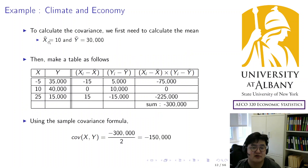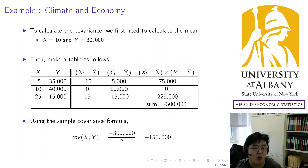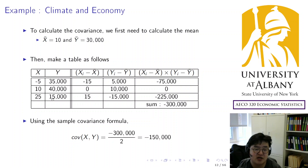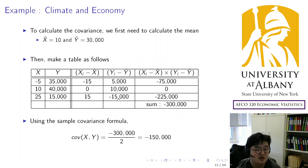The first step is to calculate the mean for each variable. Then, like we did in the variance, calculate the deviation for x and for y. For x: minus 5 minus 10 is minus 15; 10 minus 10 is 0; 25 minus 10 is 15. For y: 35,000 minus 30,000 is 5,000; 40,000 minus 30,000 is 10,000; 15,000 minus 30,000 is minus 15,000.